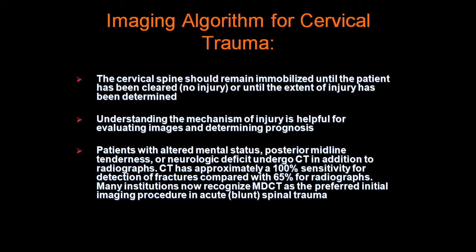CT scans have approximately 100% sensitivity for detection of fractures, compared with 65% sensitivity for radiographs. Many institutions now recognize CT as the preferred initial imaging procedure in acute spinal trauma.